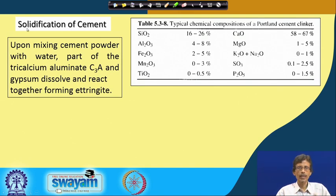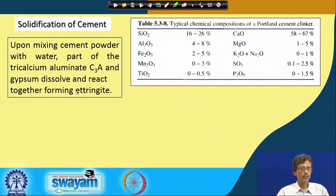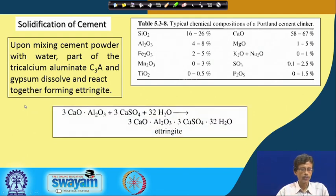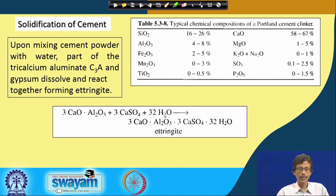When we mix this with water, consider the solidification process. Part of the Ca₃A — tricalcium aluminate — and gypsum dissolve and react together forming ettringite. Ettringite is the corresponding mineral-like material obtained when C₃A reacts in the presence of gypsum in water. The full formula of calcium aluminate can be written as Ca₃Al₂O₆, and together with gypsum and water — with 32 water molecules — you write the formula as the compound dotted with 32 H₂O.